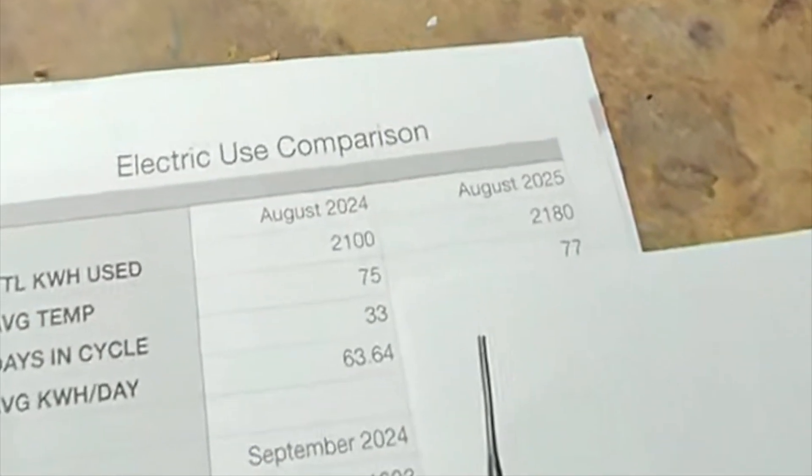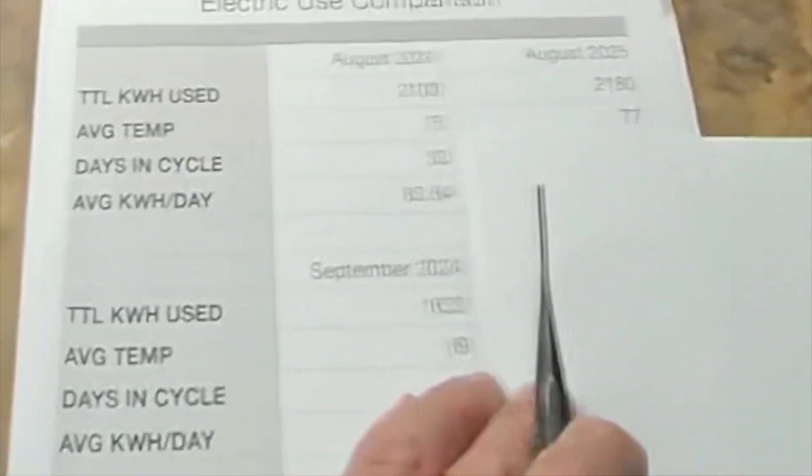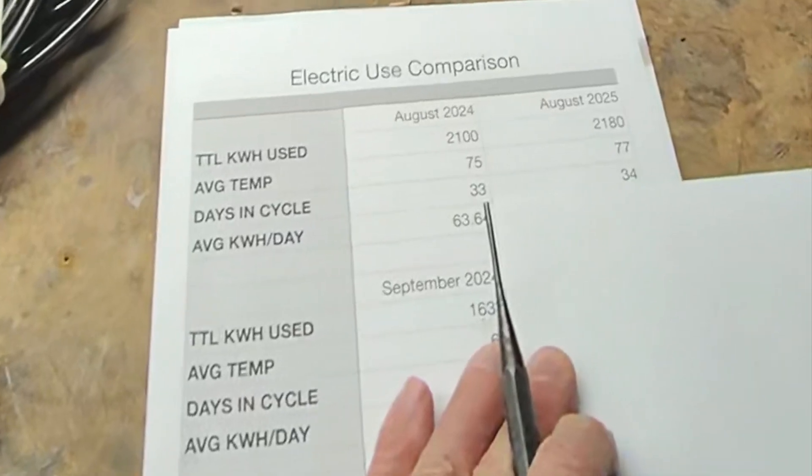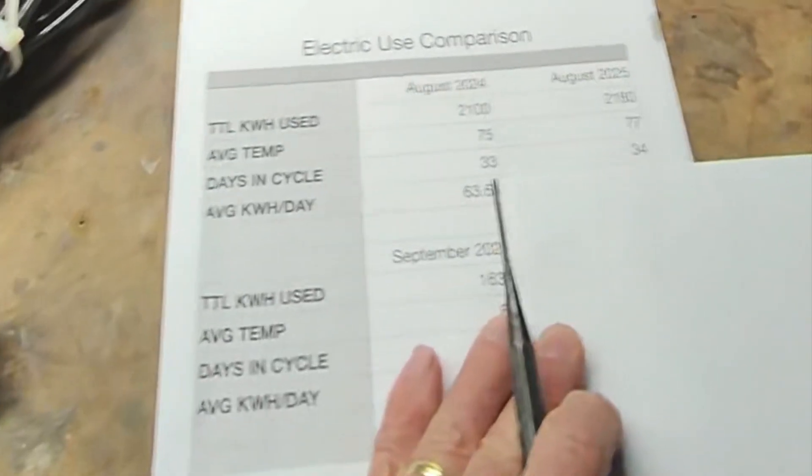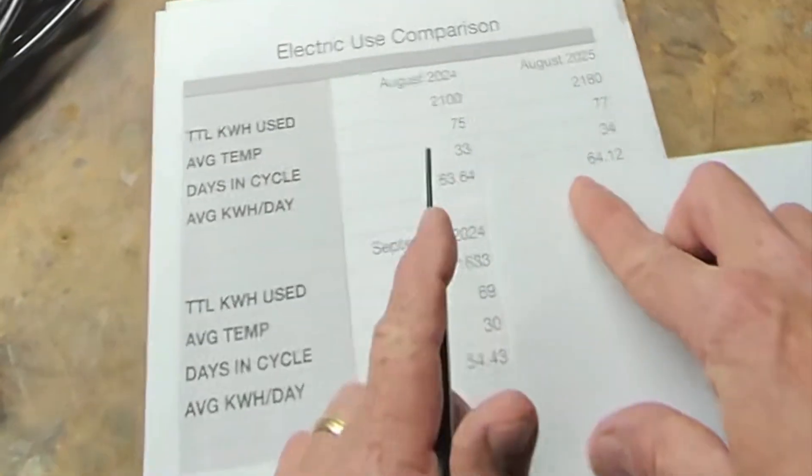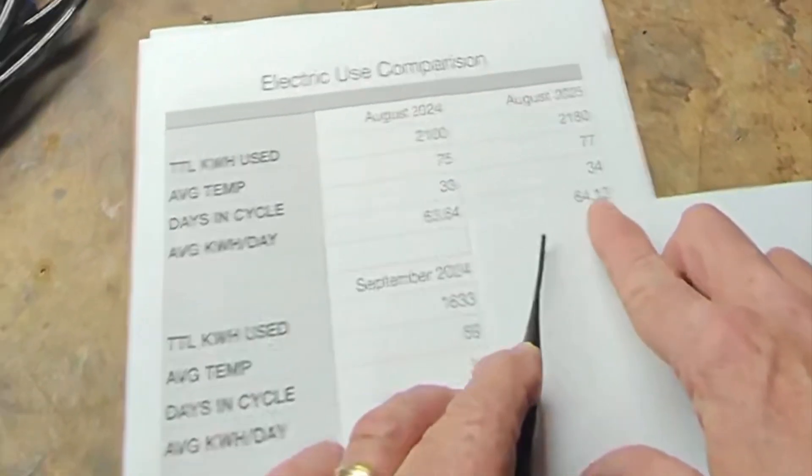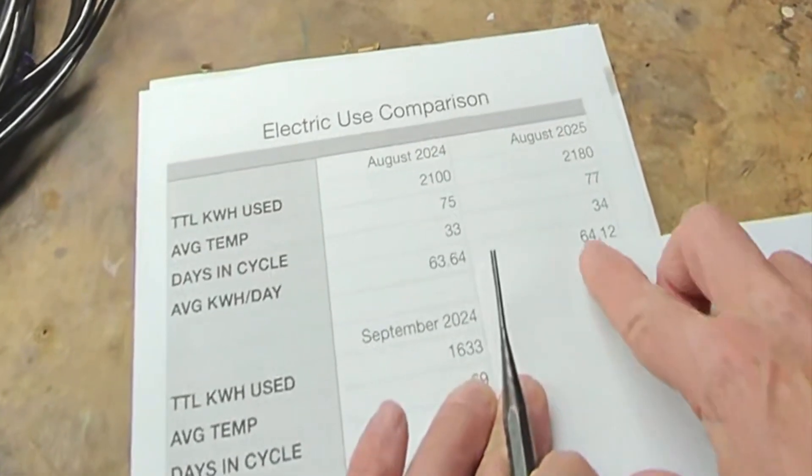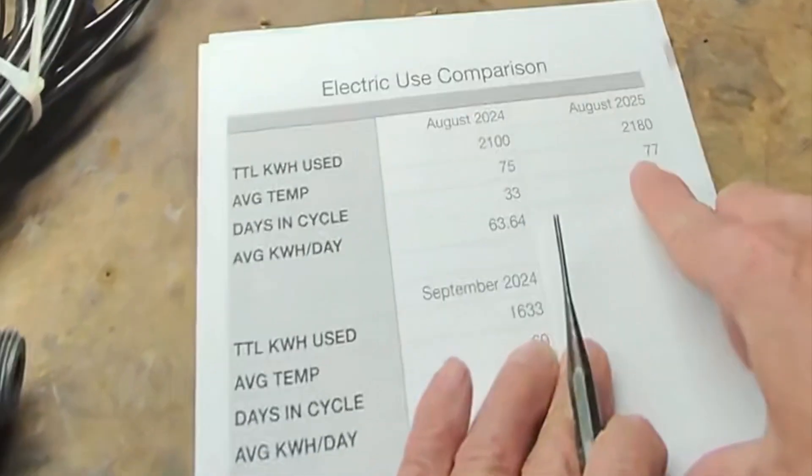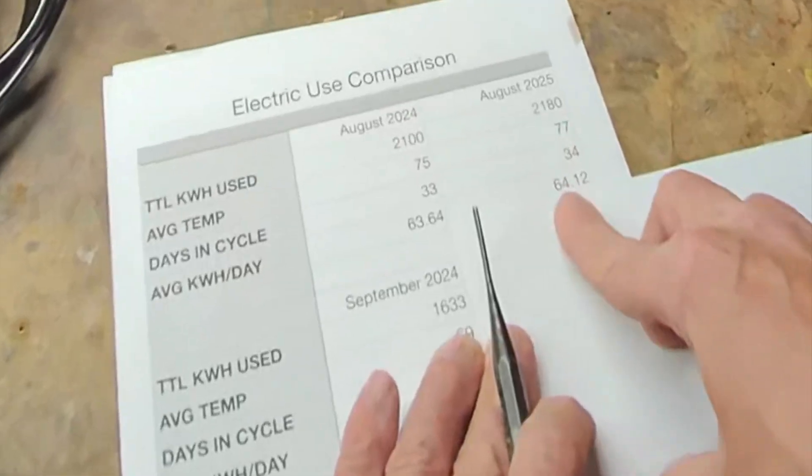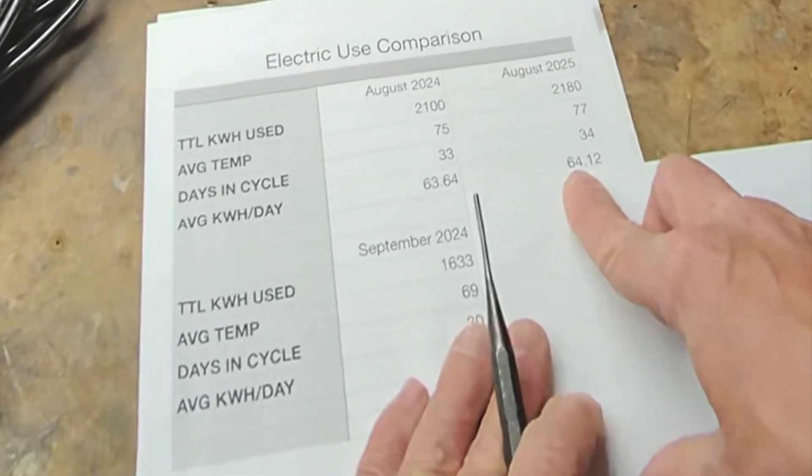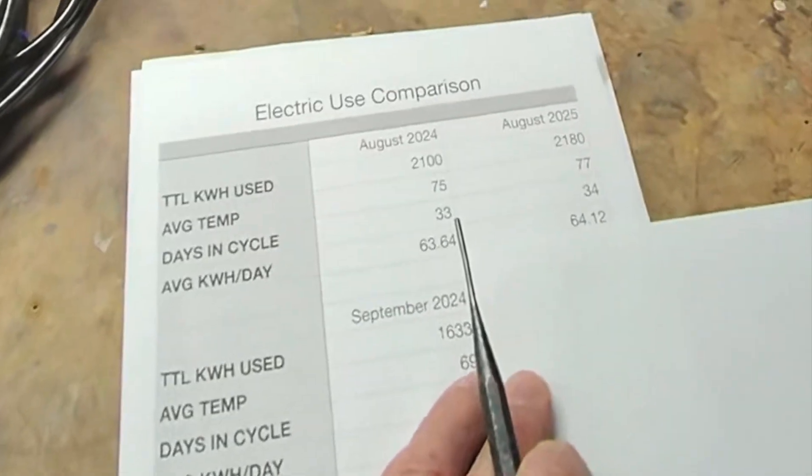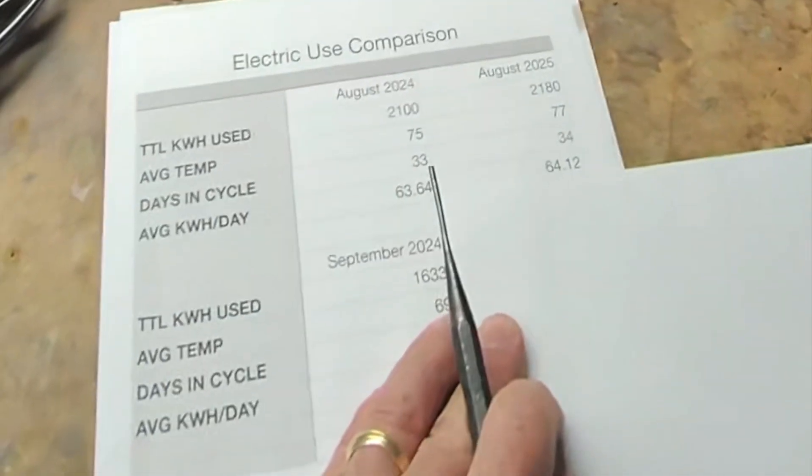Now let's take a look at August of 25. This year, the first month that we had the misting system in place. In August of 2025, we had total kilowatt hours used of 2,180. So 80 more kilowatt hours. The average temperature was 77. So that sort of makes sense. The days in the cycle were 34 instead of 33. But when you do the math and you divide the total kilowatt hours used by the number of days, you come up with a number that's higher. 64.1 versus 63.64. So about half a kilowatt hour more per day in August of 2025 than in August of 2024. I don't know if that has anything to do with the fact that the temperature on average was 2 degrees higher. But one would expect, given what we were showing when we tested this putting in, that we were drawing less power, that we'd see some difference. But really we don't. I would call that a draw given that the temperature was a little higher, but really no savings.